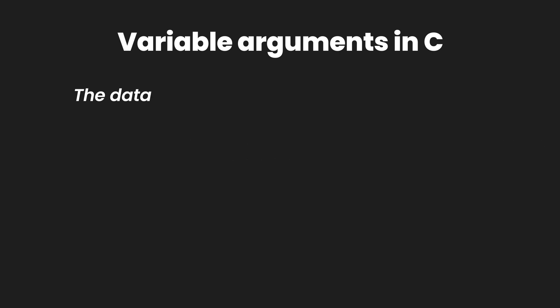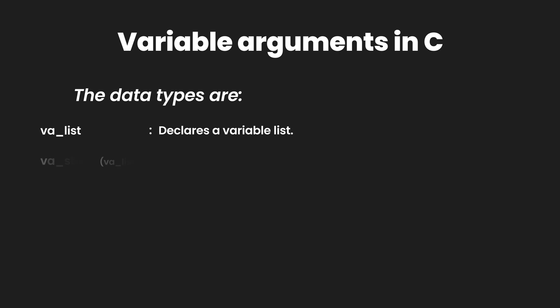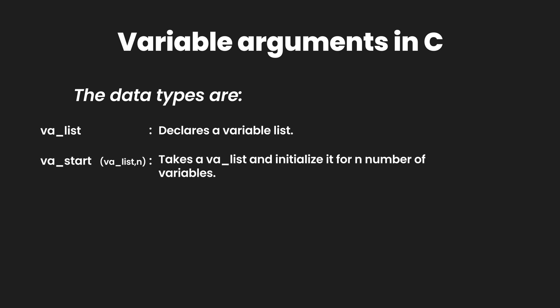These functions and data types are: va_list, which is used to declare a variable list; then we have va_start, which takes a variable list and an integer end value and initializes the variable list for n number of arguments.